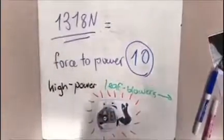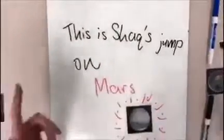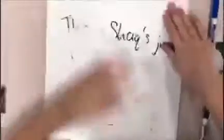This is Shaq's jump on Mars. For this, we use a different gravitational acceleration. And again, we plug into the formula and get the height. So that would be v² over 2g. Because Mars has a much weaker gravitational acceleration, the height of Shaq's jump will be much greater.